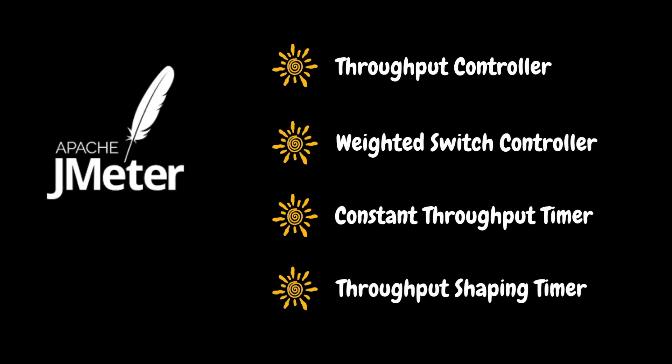Like any other performance testing tool, JMeter has elements that can help us control throughput. They are: Throughput Controller, Weighted Switch Controller, Constant Throughput Timer, and Throughput Shaping Timer. Note that Weighted Switch Controller and Throughput Shaping Timer are plugins, and we may need to install them using the Plugin Manager.